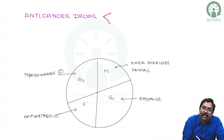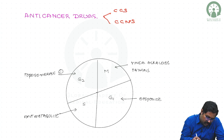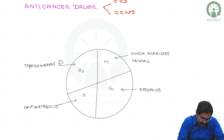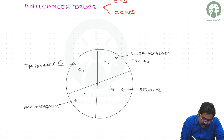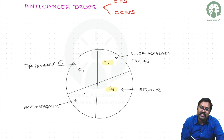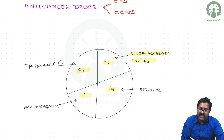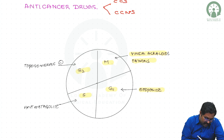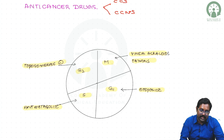Here you can see the cell cycle specific classification, where a particular drug acts at a specific phase of the cell cycle. We have the M phase, G1 phase, S phase, and G2 phase. Vinca alkaloids and taxanes act on the M phase, etoposide acts on the G1 phase, anti-metabolites act on the S phase, and topoisomerase inhibitors act on the G2 phase.